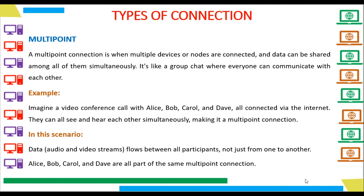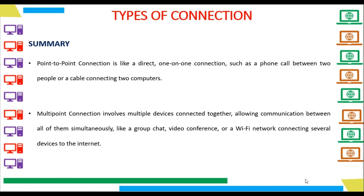An example of a Multipoint Connection: imagine a video conference call with Alice, Bob, Carol, and Dave, all connected via the internet. They can all see and hear each other simultaneously, making it a Multipoint Connection. In this scenario, data — audio and video streams — flows between all participants, not just from one to another. Alice, Bob, Carol, and Dave are all part of the same Multipoint Connection.